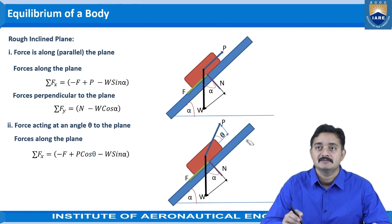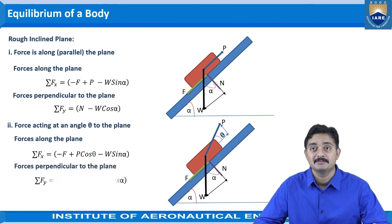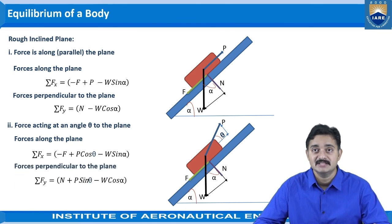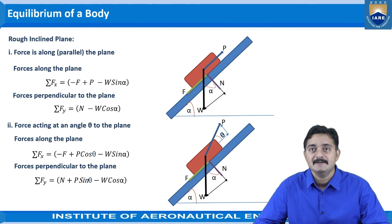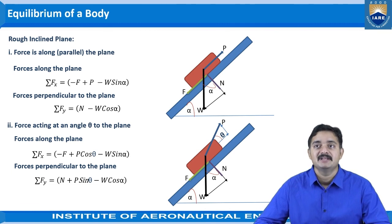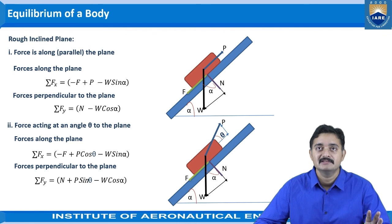For forces perpendicular to the plane, there are three forces: sigma Fy equals N plus P sin theta minus W cos alpha. Here N and P sin theta act in the positive direction while W cos alpha acts in the negative direction. These are the equilibrium conditions to be applied whenever frictional force is present — we must consider the components of all forces in the equilibrium equations.